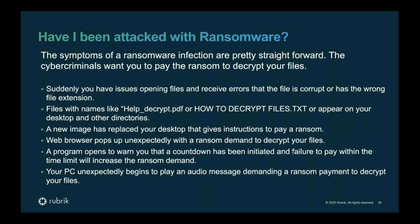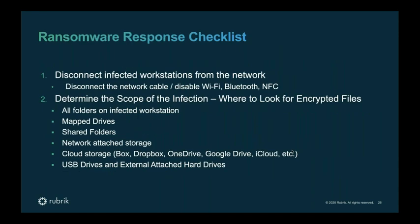If you understand you've been hit with a ransomware attack, you have to start the mitigation response plan. It all starts by getting infected workstations disconnected from the network — not just the network cable, but also think about Wi-Fi, Bluetooth, and NFC. Get everything off the network and eliminate patient zero. Then determine the scope of the infection: were files impacted on local systems only, on mapped drives, on the shared network, network-attached storage, or even cloud repositories?